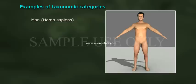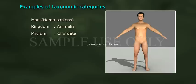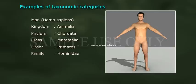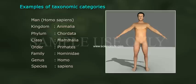Example of taxonomic categories — Man (Homo sapiens): Kingdom Animalia, Phylum Chordata, Class Mammalia, Order Primates, Family Hominidae, Genus Homo, Species sapiens.